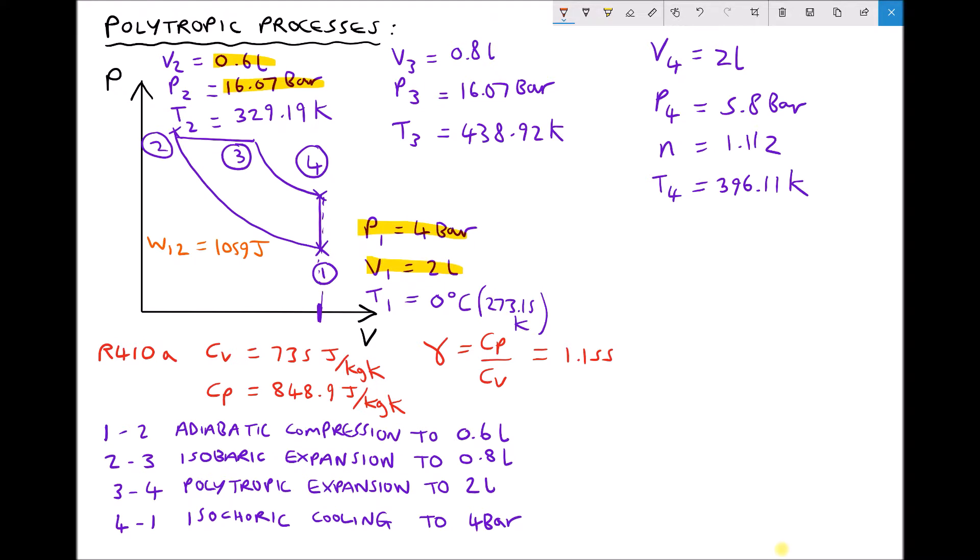So the formula for work done in an isobaric or constant pressure process is as follows: W going from 2 to 3 equals minus P times V2 minus V1. But because we're going from position 2 to position 3, we're instead going to write that as V3 minus V2. Now note that I haven't specified whether P is P2 or P3, and the reason behind that is because they're both the same. It's an isobaric or constant pressure process. But once again we do need to remember to work in SI units.